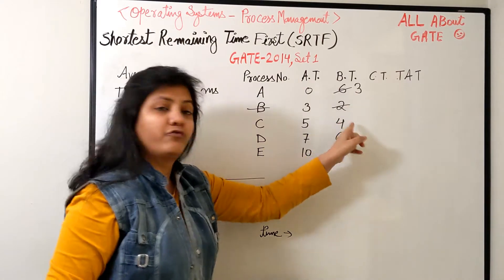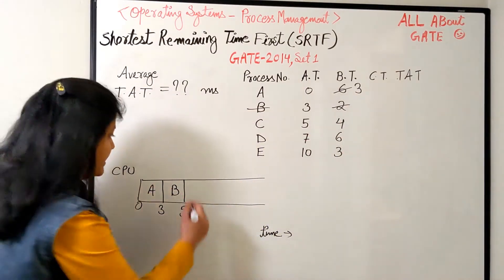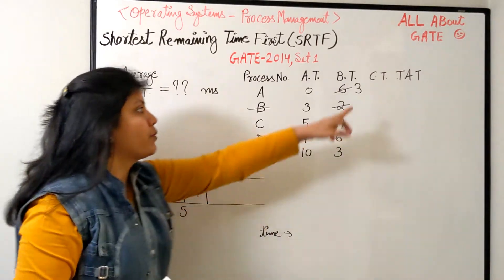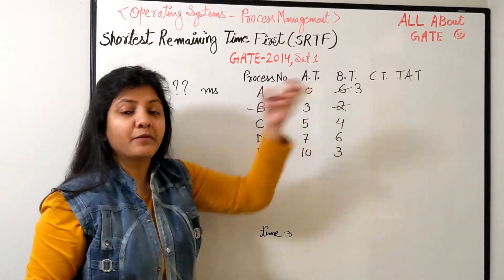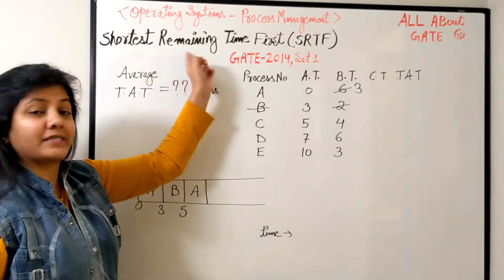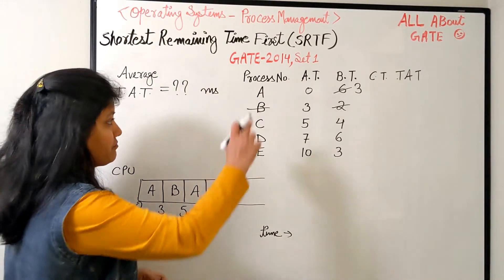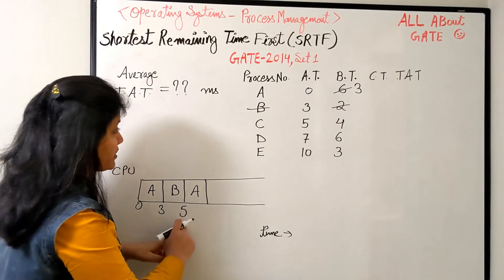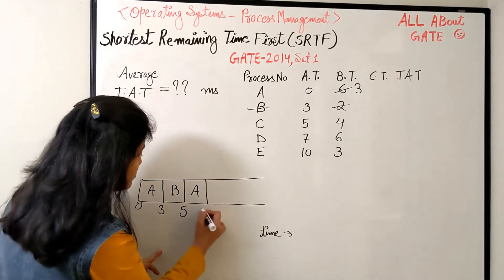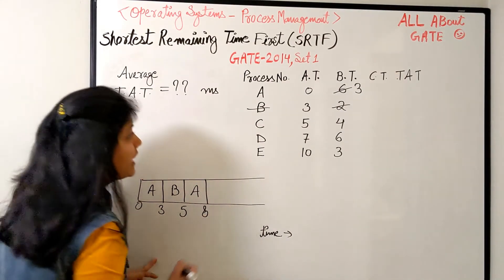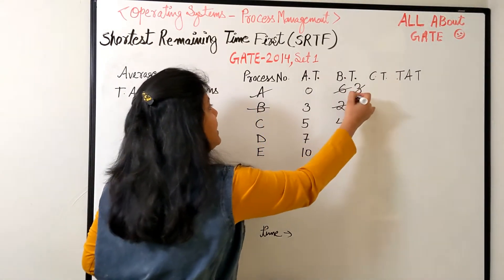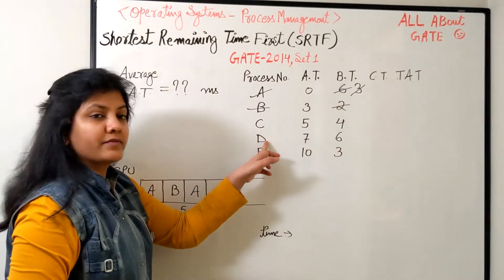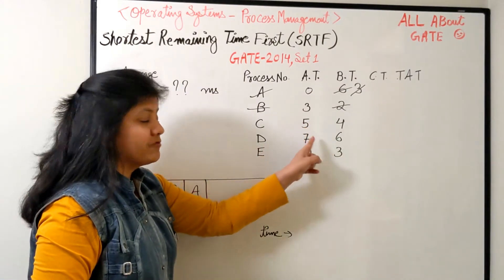A needs only three which is less than C's four, so we schedule A again. A runs for three bursts from five to eight, and process A is finished. This shows the importance of tracking the remaining burst time by striking off and rewriting it correctly.